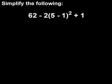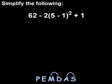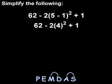According to the Order of Operations, or PEMDAS, we first simplify what's inside the parentheses. So here, we have 5 minus 1, which is 4. So we rewrite the problem as 62 minus 2 times 4 squared plus 1.